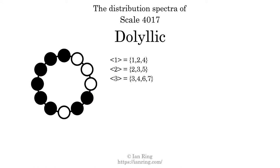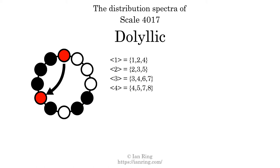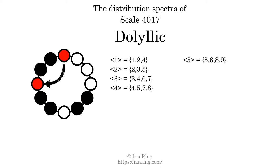The spectrum width of this generic interval is 4. The generic interval of 4 scale steps comes in 4 different specific interval sizes: 4 semitones, 5 semitones, 7 semitones, and 8 semitones. The spectrum width of this generic interval is 4. The generic interval of 5 scale steps comes in 4 different specific interval sizes: 5 semitones, 6 semitones, 8 semitones, and 9 semitones. The spectrum width of this generic interval is 4.